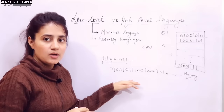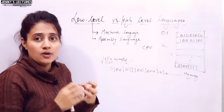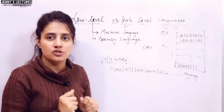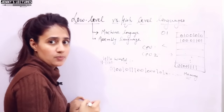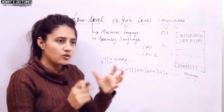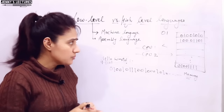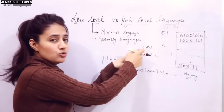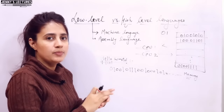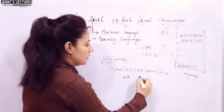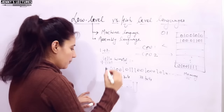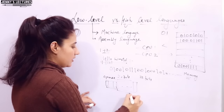Programs written in machine language are dependent on the computer architecture. Every CPU has a different architecture, or families of CPUs may share the same architecture. For example, in one CPU instructions may be 20 bits, where the first 4 bits are the opcode (the operator like plus), the next 8 bits are for one operand, and the next 8 bits are for the second operand. This format is completely dependent on the CPU architecture.